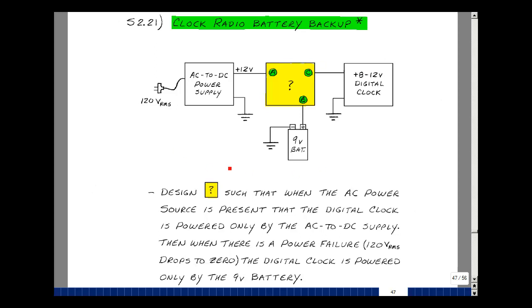Given this system diagram, I'd like to design this box such that when the AC power source is present, the digital clock is only powered by the AC to DC power supply. In other words, here's my clock. It can run between 8 and 12 volts, and I've got a power supply here that's plugged into the wall outlet and puts out a 12 volt output voltage.